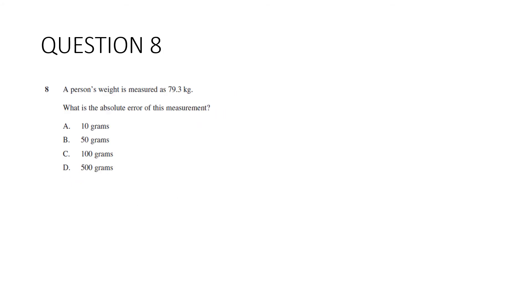Question eight. A person's weight is measured as 79.3 kilograms. What is the absolute error of this measurement? These sorts of questions students don't typically like. So let's see if we can make it a little bit easier to understand. So we've got this formula on the formula sheet, but it's not particularly useful. The absolute error is a half multiplied by the precision. Now, the precision is referring to what this is rounded to. Remember, this is a continuous measurement. Before it was rounded, it went on forever. It could have been 79.2865, blah, blah, blah, blah, blah. It's been rounded to one decimal place.